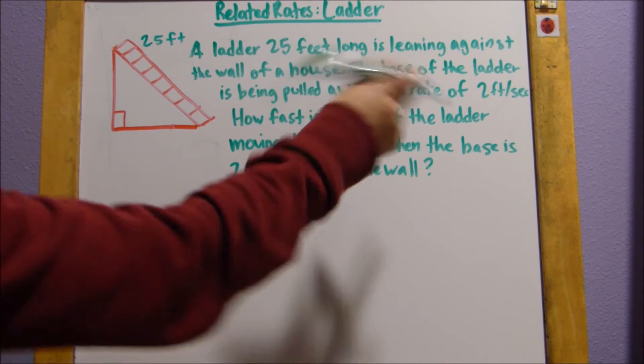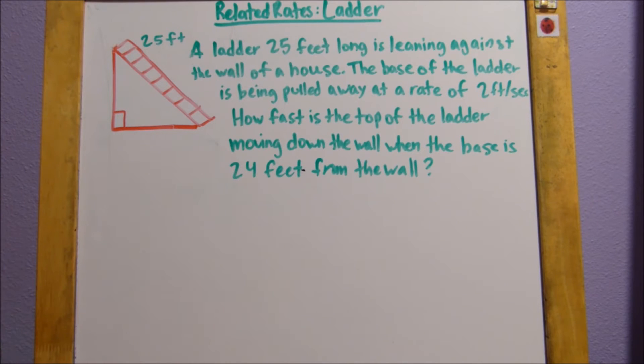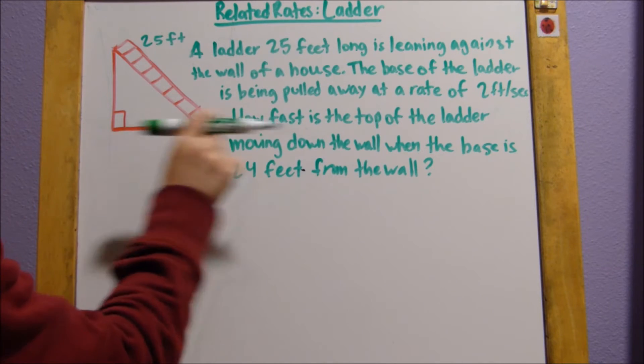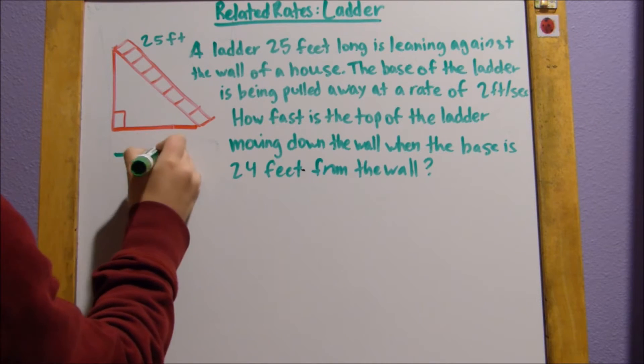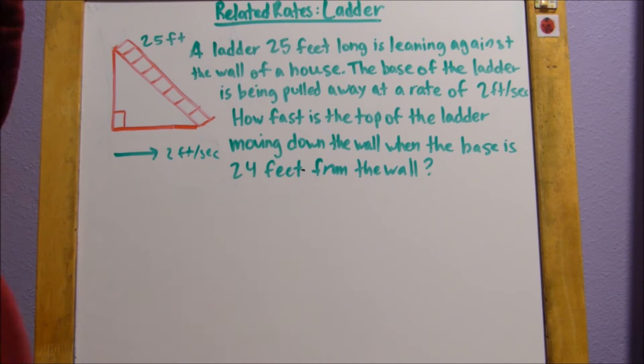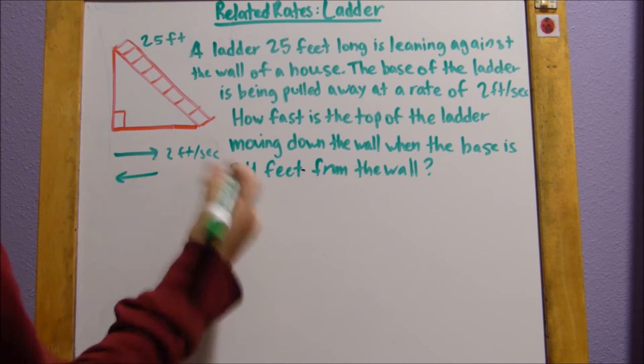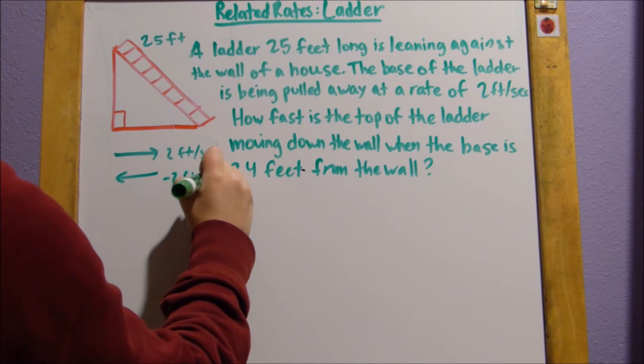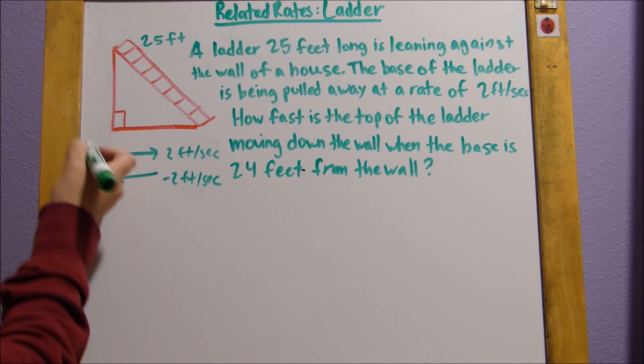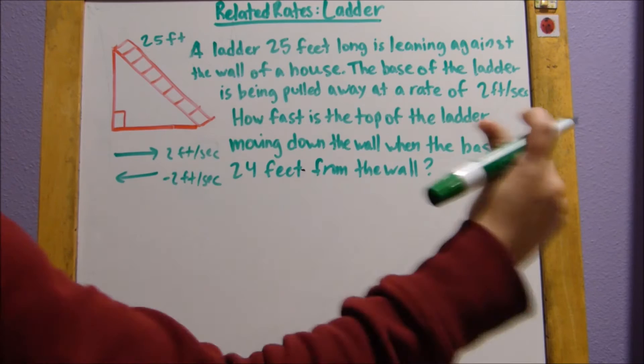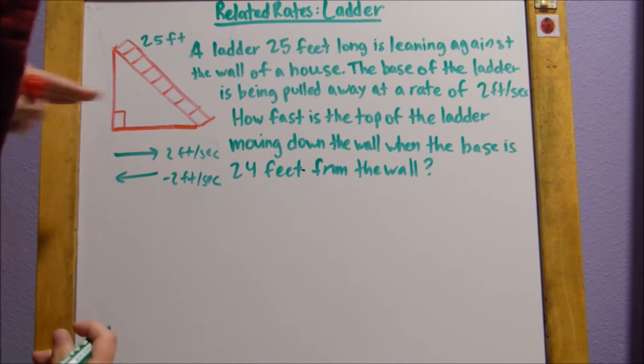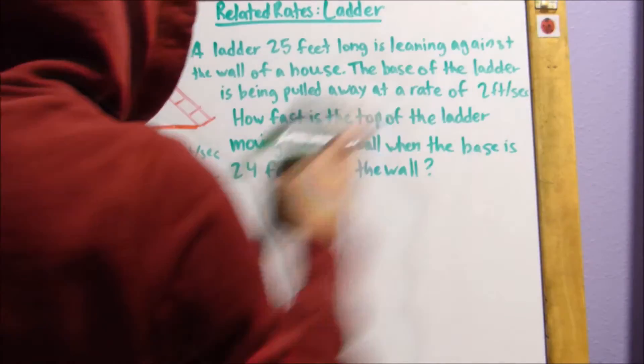Now, we're also told that the base of the ladder is being pulled away at the rate of 2 feet per second. So if this is the base of the ladder, it's moving this way, it's being pulled away from the wall. So, 2 feet per second. If this ladder was being pushed against the wall this way, it would be negative 2 feet per second. We know that rates are negative when you're going back to the point of origin, when you're pushing back this way. But here, the ladder is being pulled away, going this way, so it's positive.